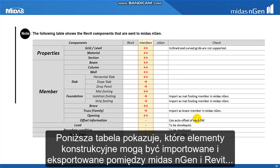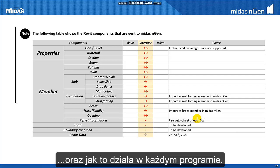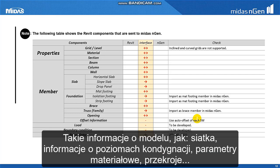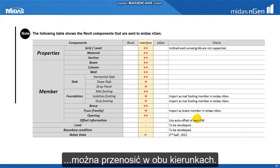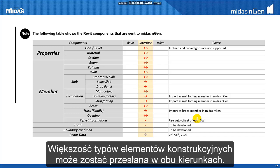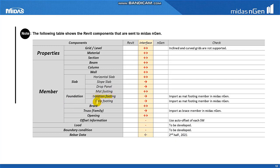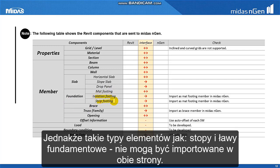The following table shows which structural members can be shared between Midas Engine and Revit Structure, and how each works in each program. Model properties such as grid, Revit information, materials, and sections can be transferred in both directions. Most member data can also be transferred in both directions. However, Engine data of isolated footings and strip footings cannot be imported into Revit.